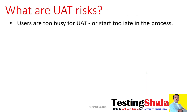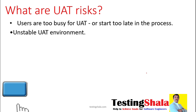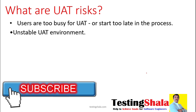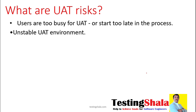What are the risks in UAT? The major risk is that end users are sometimes too busy to perform user acceptance testing, or because UAT starts at the end of the phase, the overall process might get delayed. The second risk is an unstable UAT environment, which requires a totally different environment to be set up before testing begins. The third major risk is inadequate test data in the UAT environment.